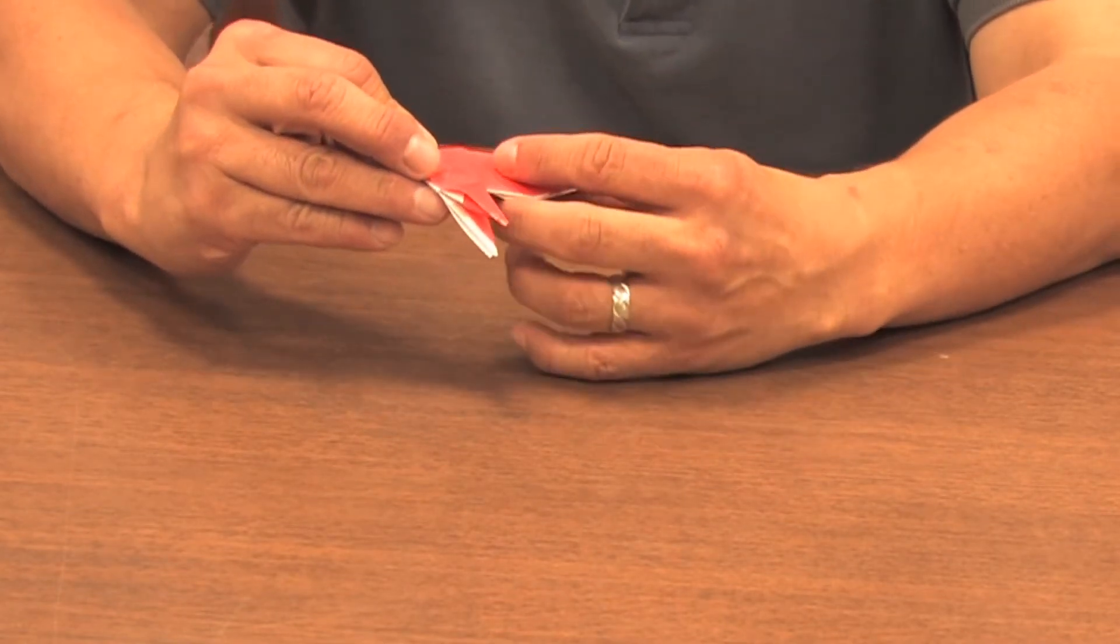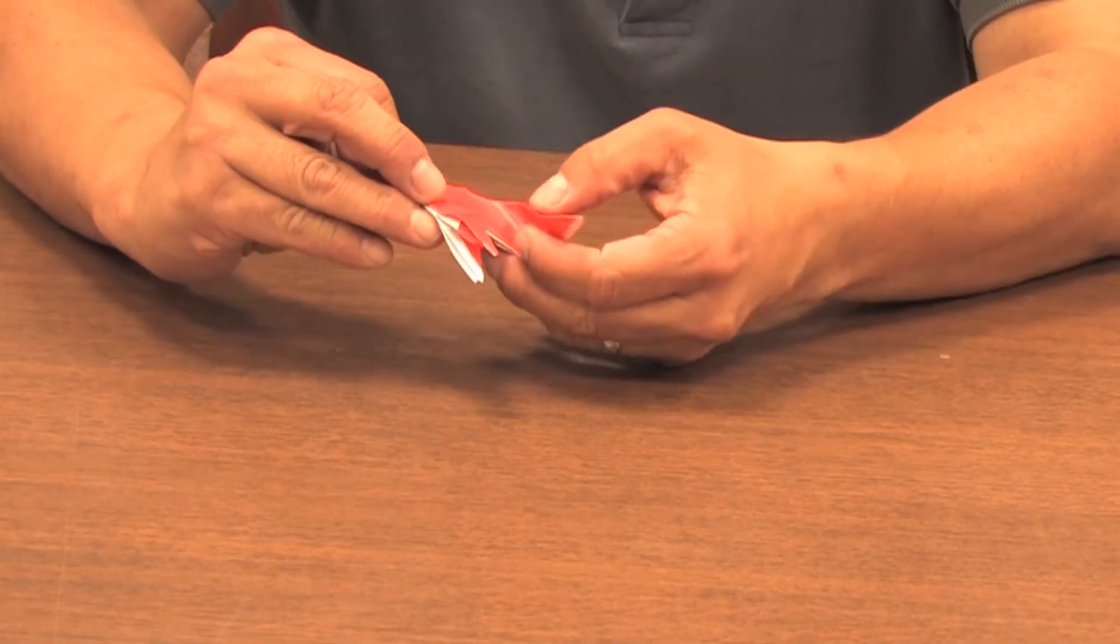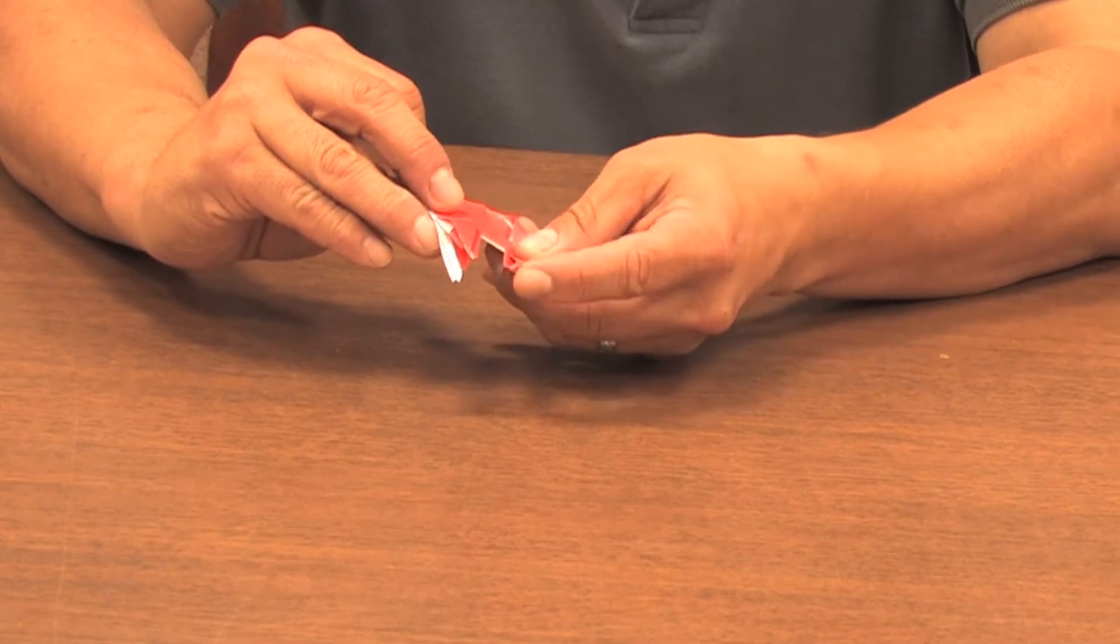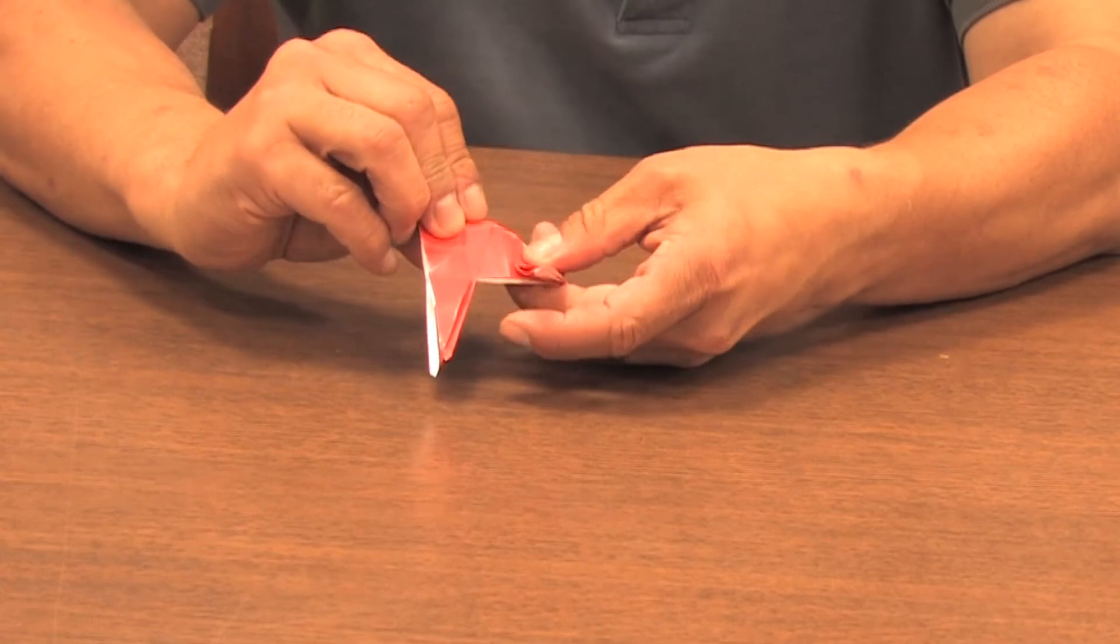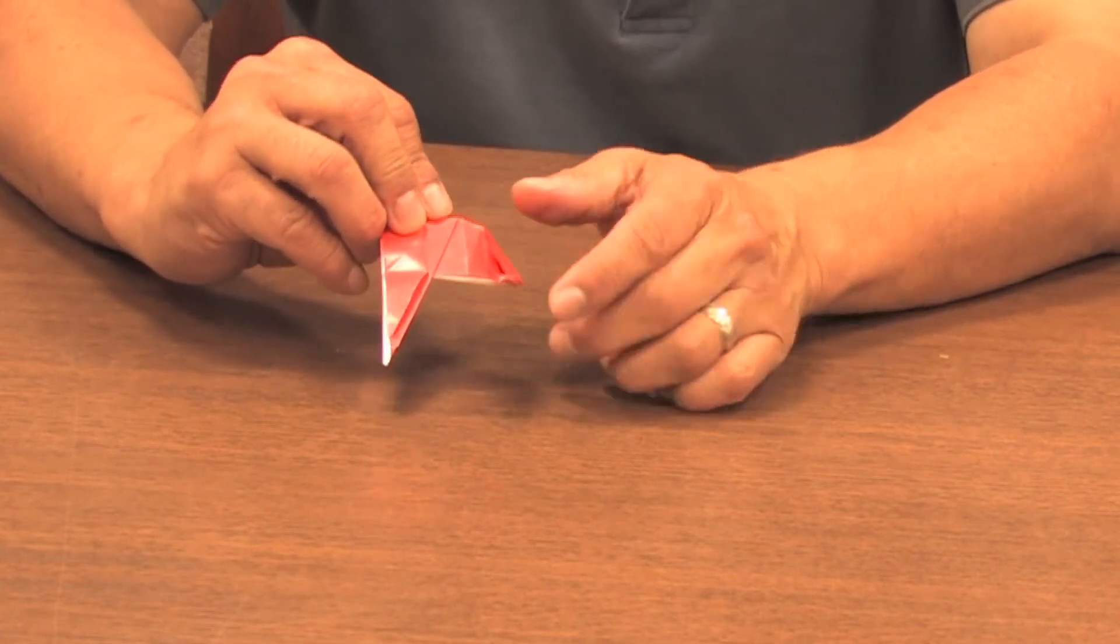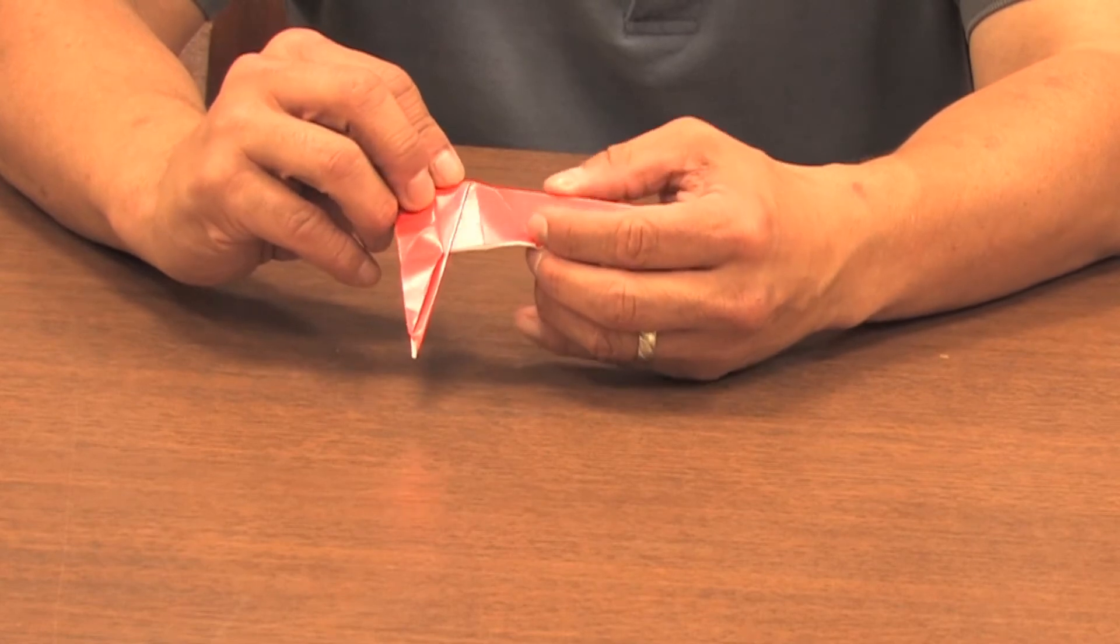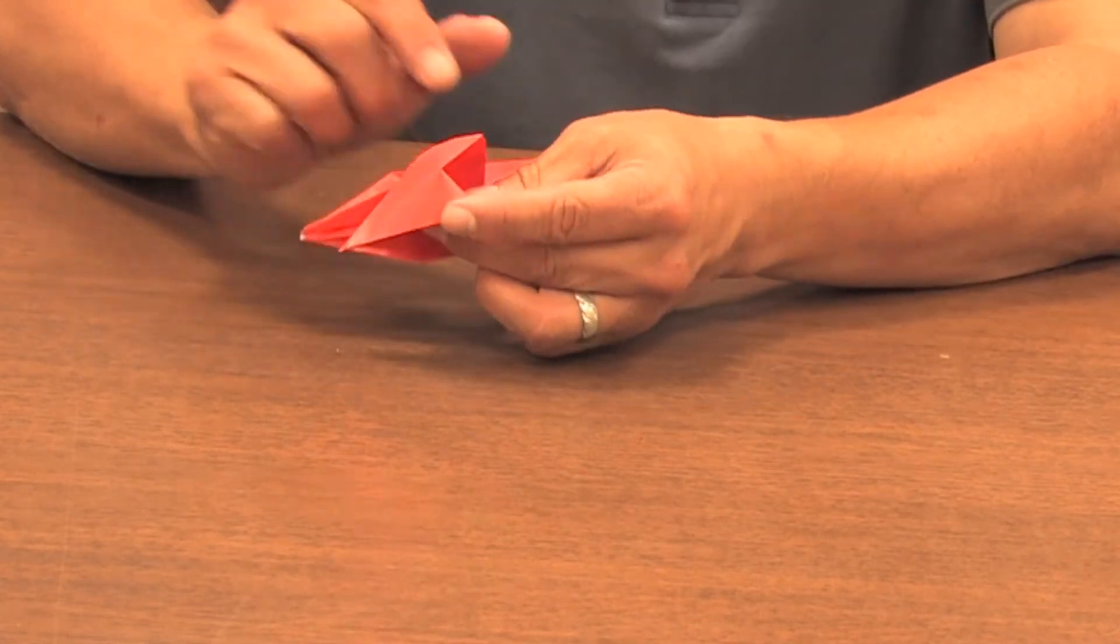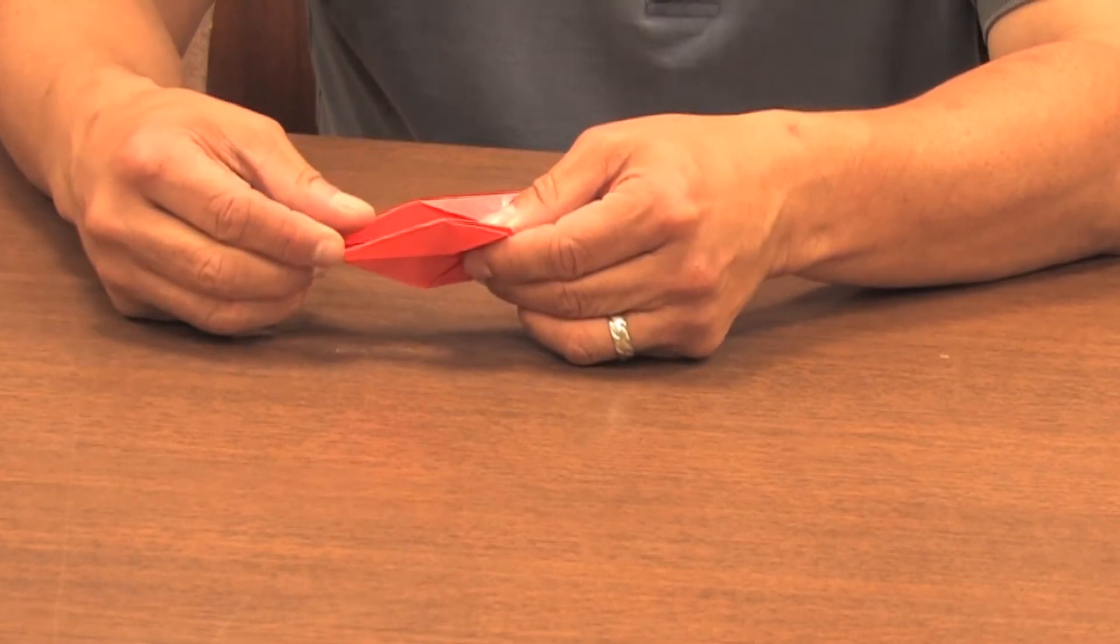To make the back leg, you're going to have a little back side right here and it's going to go down to...you just have to see where it's going to stand up nicely. Probably about right here. So you fold that over and then we're going to do a reverse inside fold. So it's going to be like this.